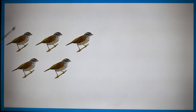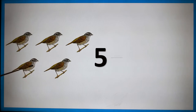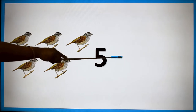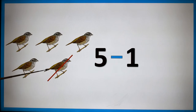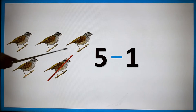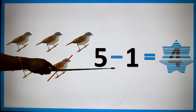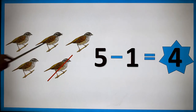Now how many sparrows are there here, children? 1, 2, 3, 4, 5 — five sparrows. The symbol for subtraction is minus. Five minus one — I'm going to cancel one sparrow from this. How many sparrows are left over? 1, 2, 3, 4 — four sparrows. So five minus one is equal to four.